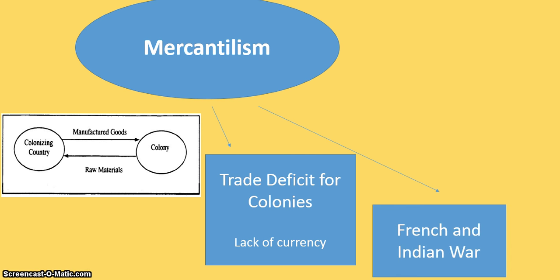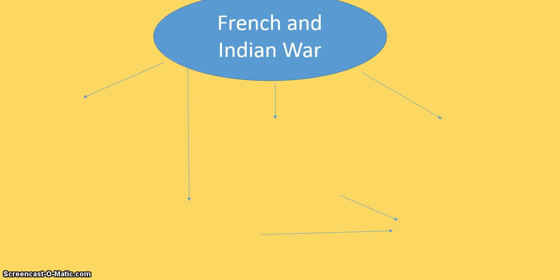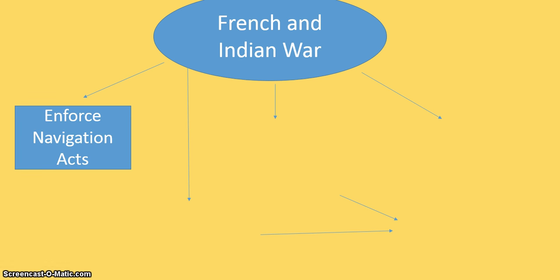Mercantilism leads to the French and Indian War, and the French and Indian War is what causes all of the taxation. The French and Indian War was really about mercantilism — the British and the French fighting for North America and to have those colonies to exploit. The French and Indian War is going to lead to a couple things. First, it's going to lead to the end of salutary neglect. As British people came over to fight that war, they realized the colonists were not following the Navigation Acts — they were smuggling and trading with whoever they wanted. So the British had to start enforcing those. A new Secretary of the Treasury, Grenville, decided they needed to tax the colonies.